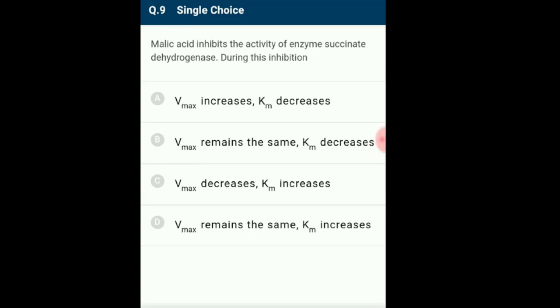Question 9: Maleic acid inhibits the activity of enzyme succinate dehydrogenase. Any substance that can diminish the velocity of an enzyme is known as an inhibitor. In competitive inhibition, the enzyme and inhibitor compete to bind to the same active site; if substrate concentration is increased, chances of substrate binding increase and Vmax remains the same but Km increases. In non-competitive inhibition, substrate and inhibitor bind at different sites. Maleic acid is a competitive inhibitor competing with succinate at the active site of succinate dehydrogenase. The answer is option D: Vmax remains the same, Km increases.